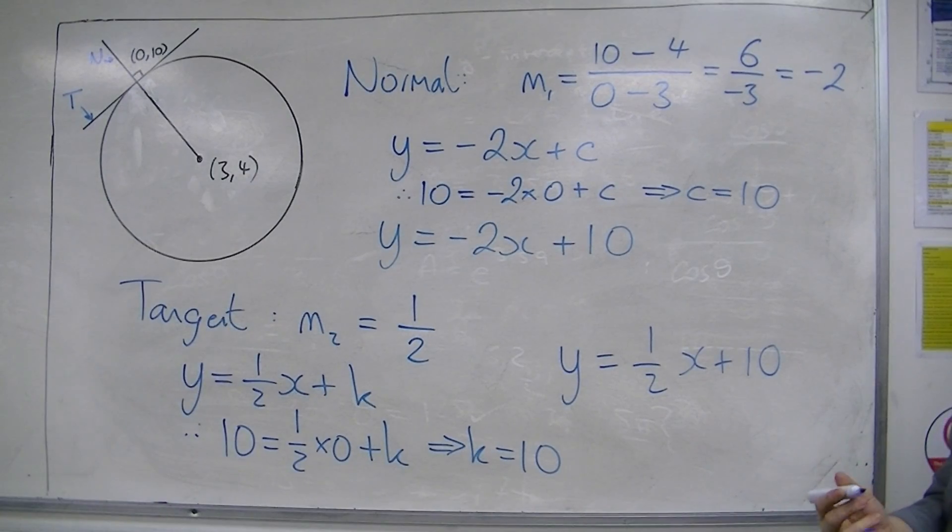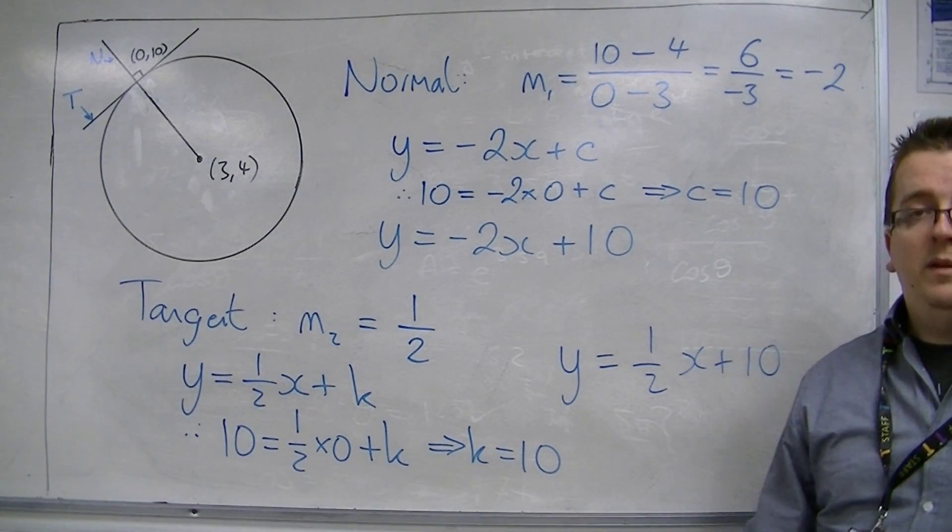So, that is how we can find the equation of the normal and the tangent at a particular point.